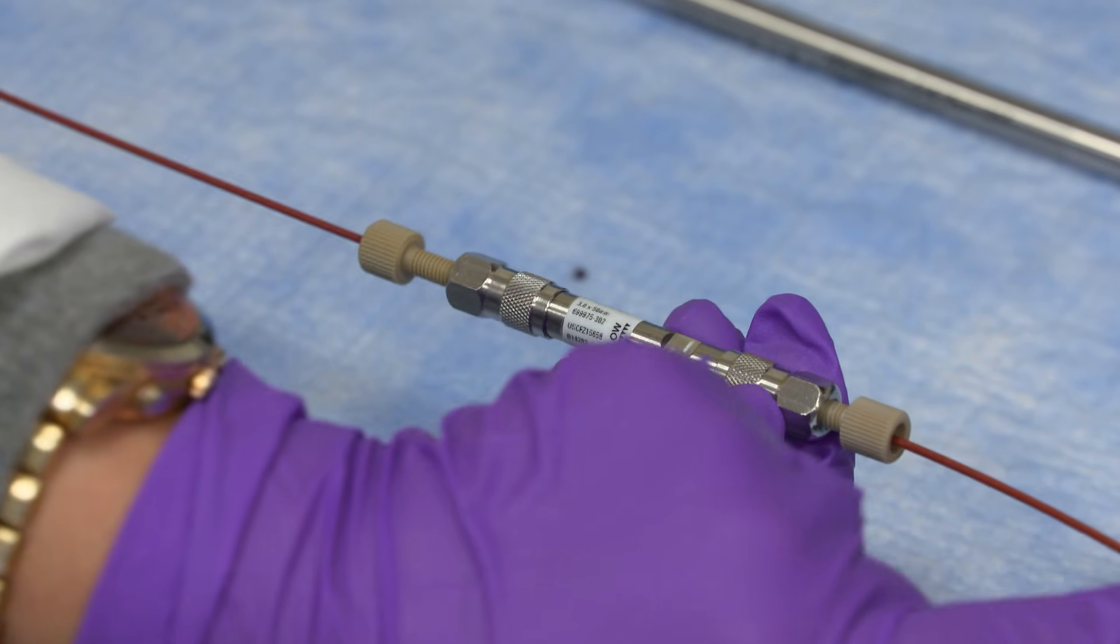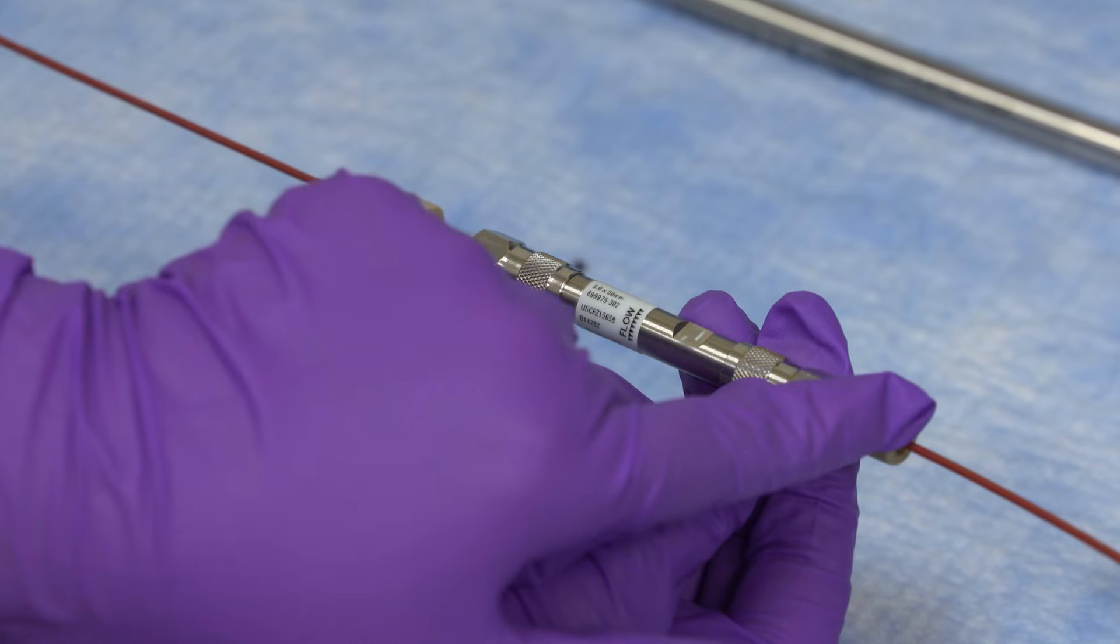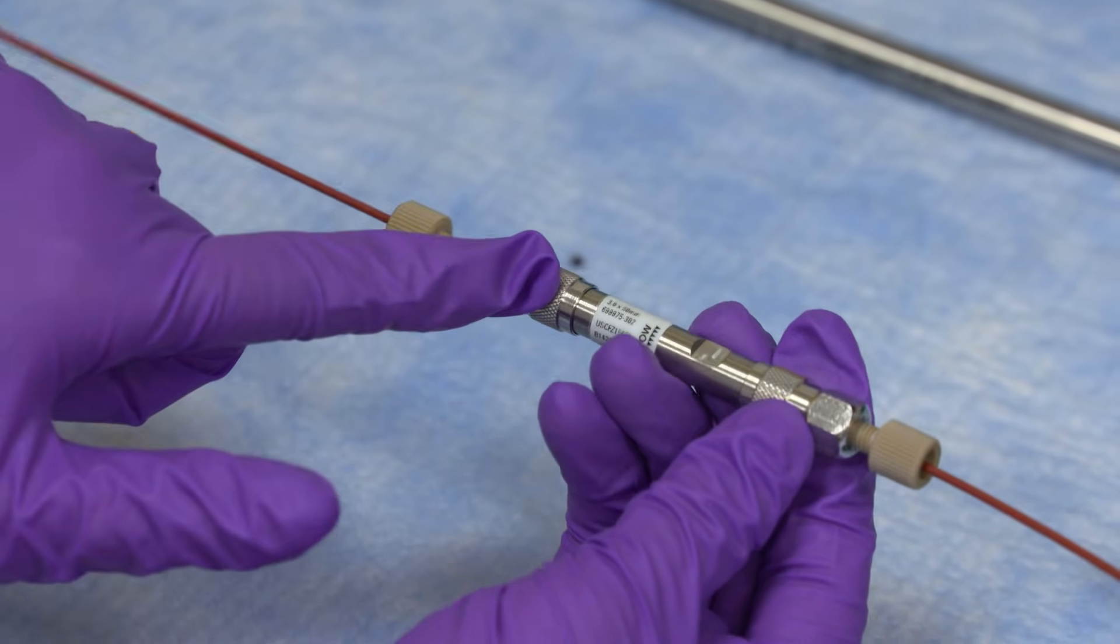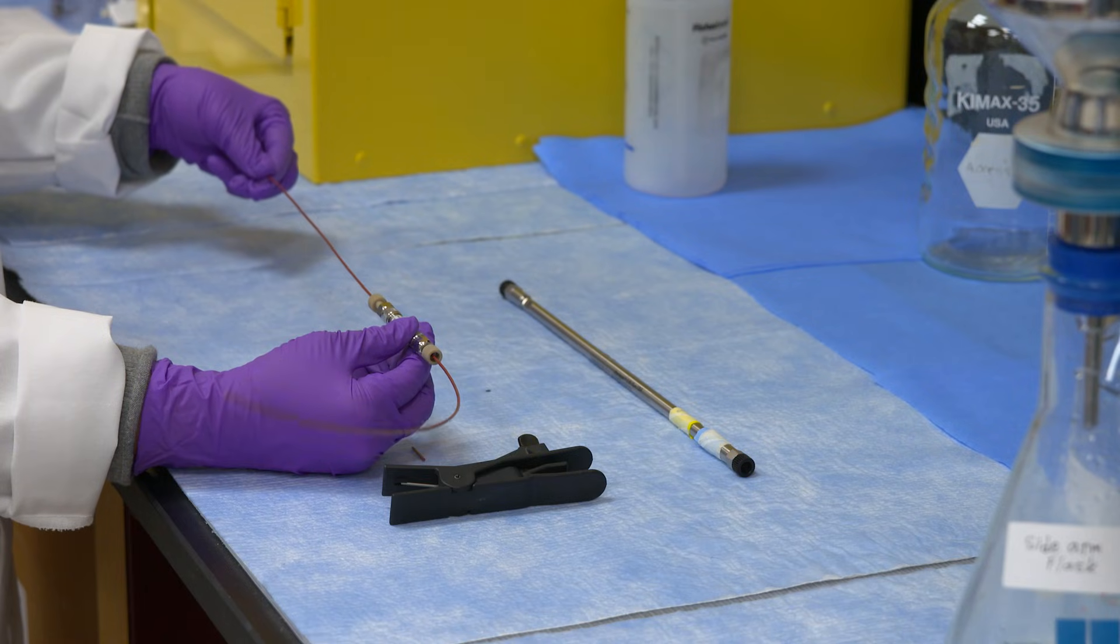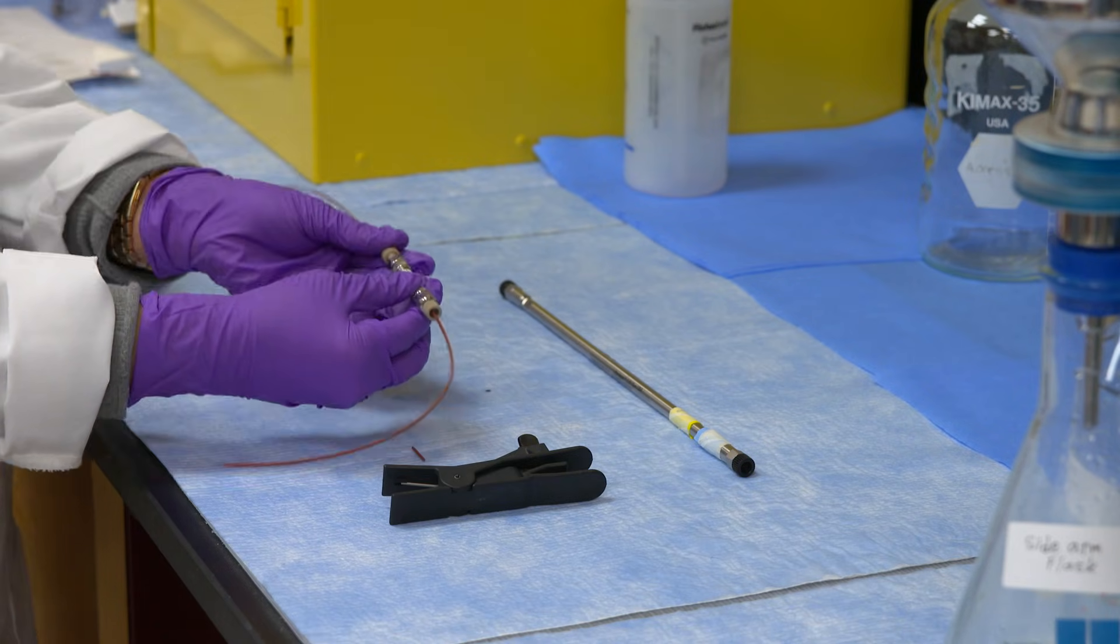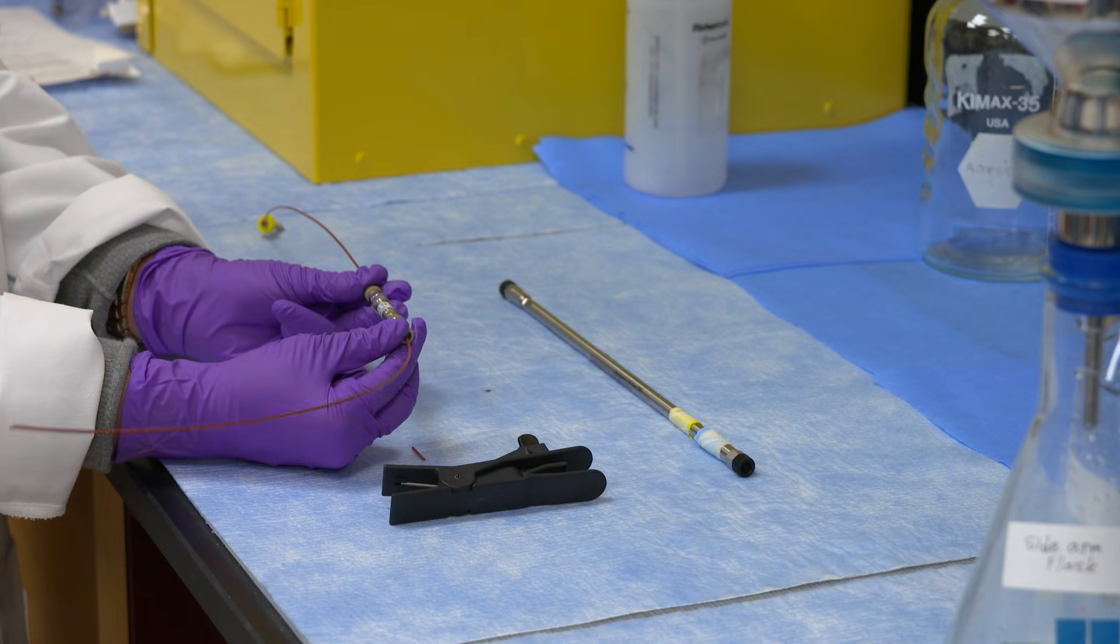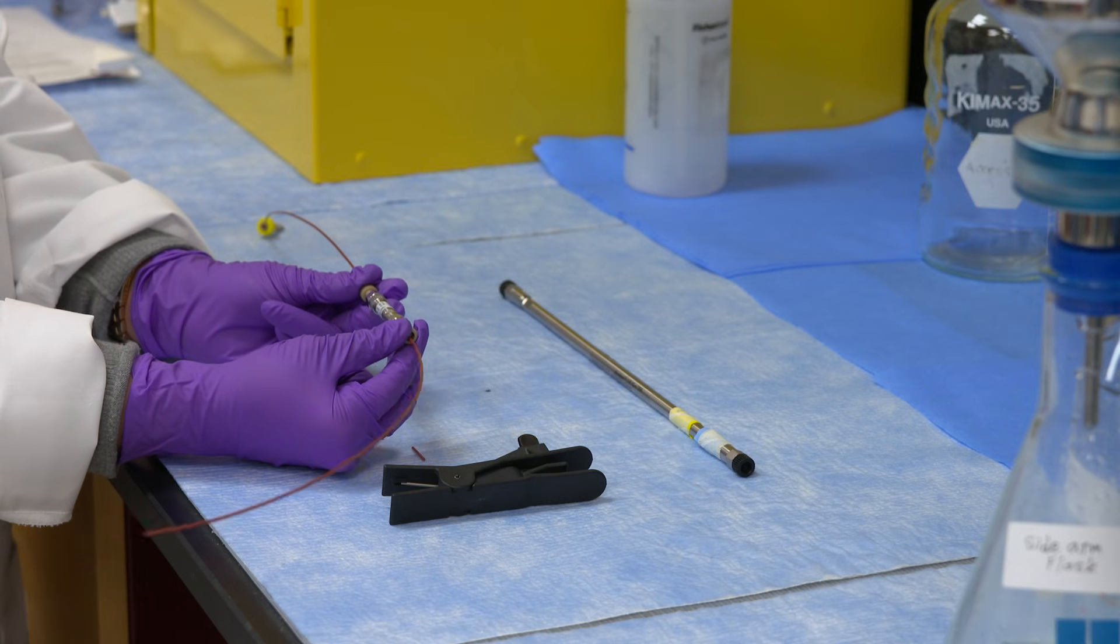Once the flow of solution comes in, then it comes out from this end of the ferrule out to the detector for it to be analyzed. Now this column is ready to be installed in the HPLC system.